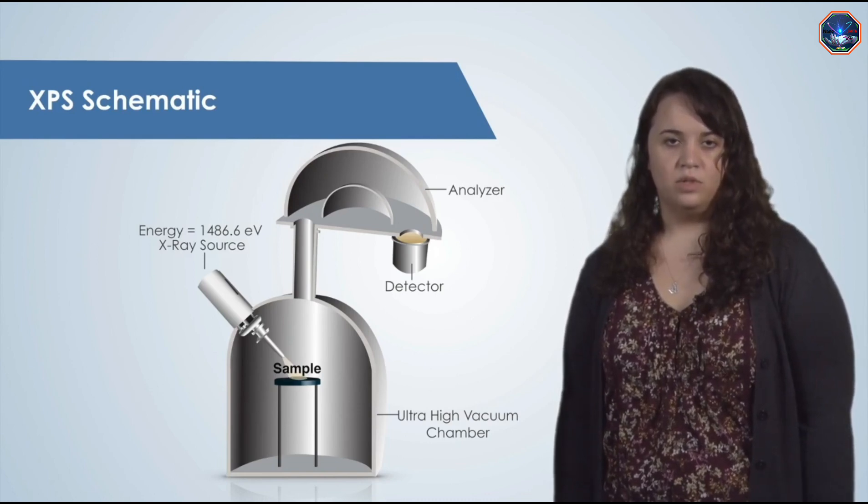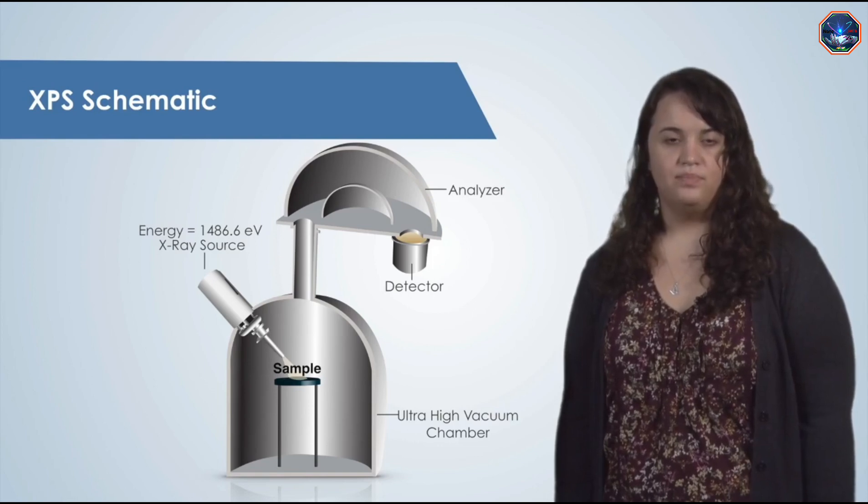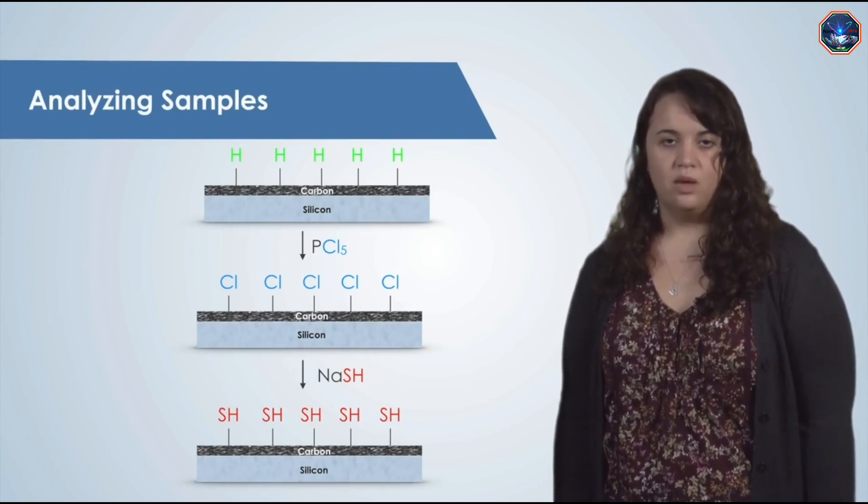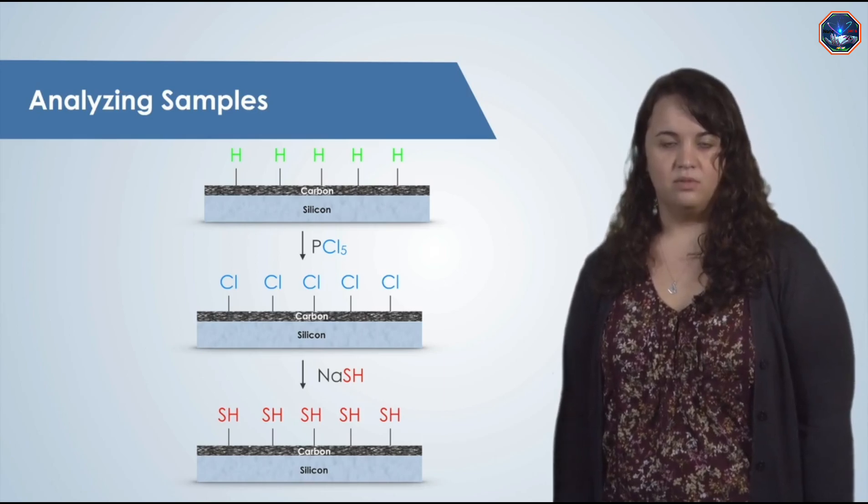The spectrum that is produced will tell us what elements are present on the surface of the sample. I'm trying to bind chlorine and sulfur to the surface of a carbon film with the chemical reaction shown here. Let's go to the lab to see if I was successful.